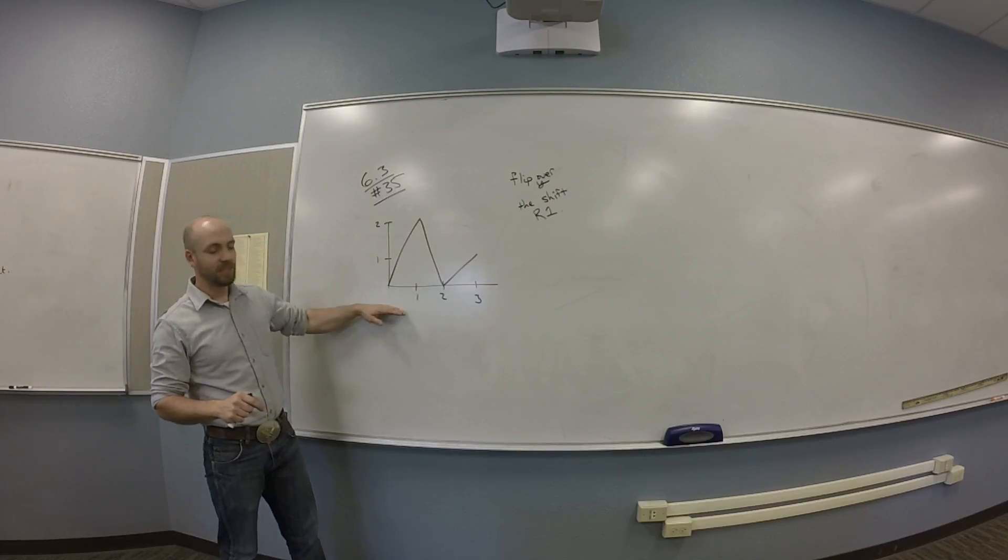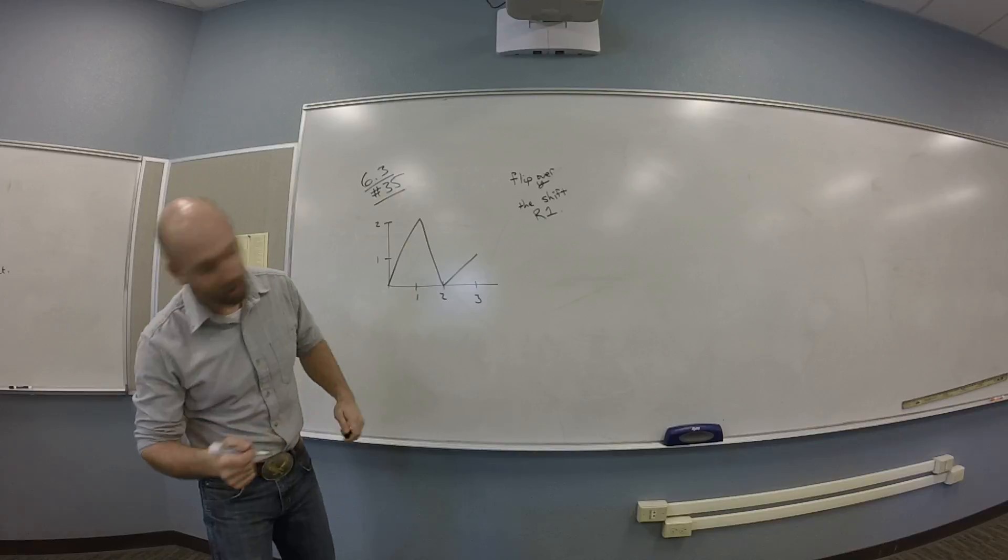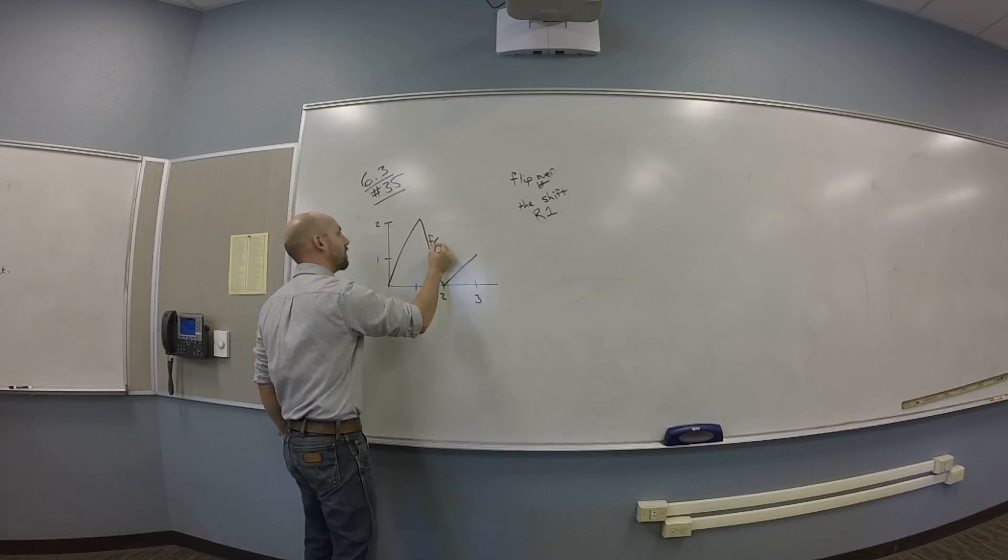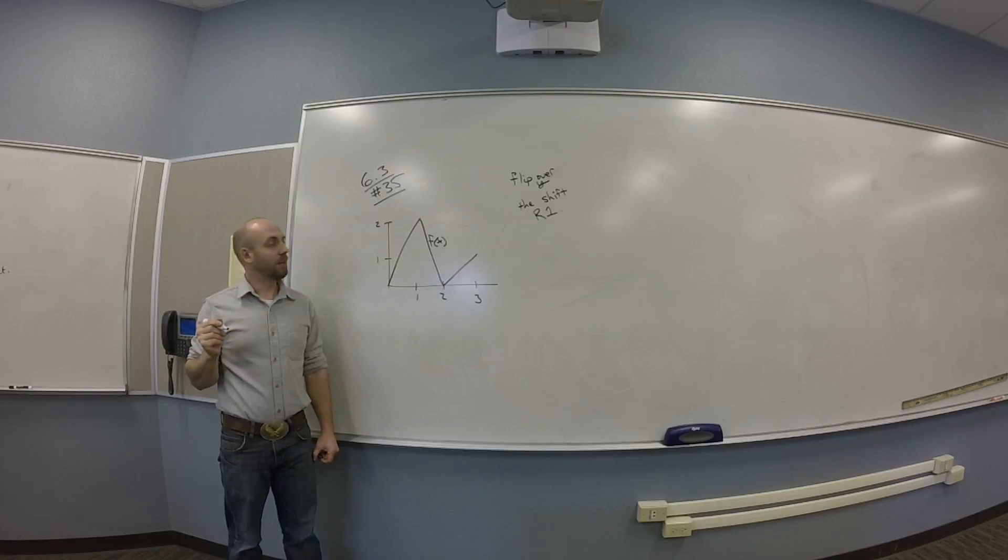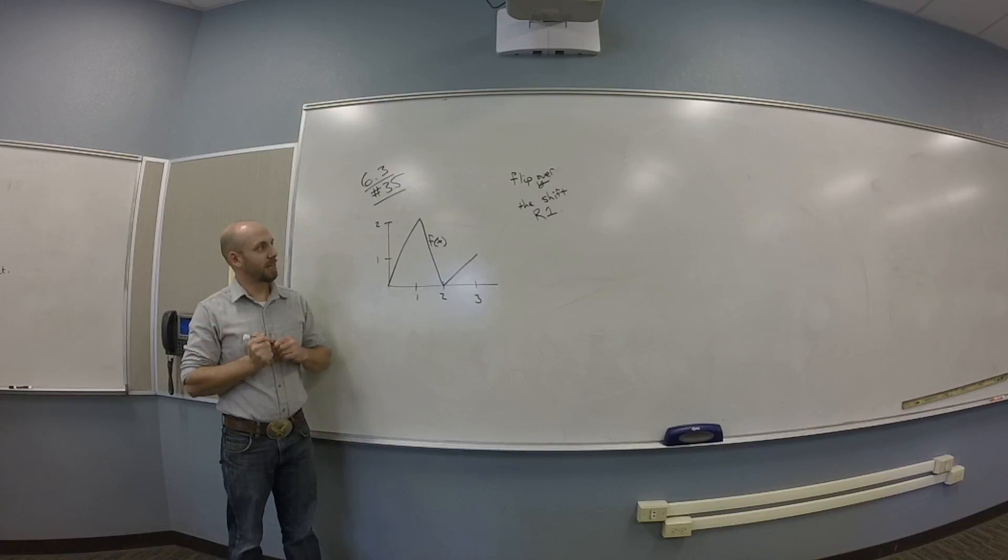So I'm supposed to take this function, which they're calling F. They give me a picture. F of x is this thing. And I'm supposed to flip this thing over the y-axis and then shift right one unit.